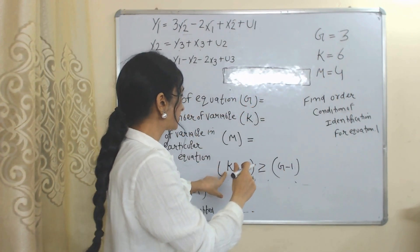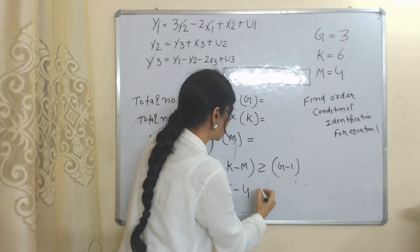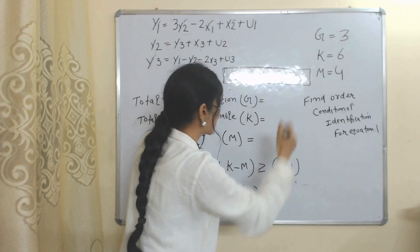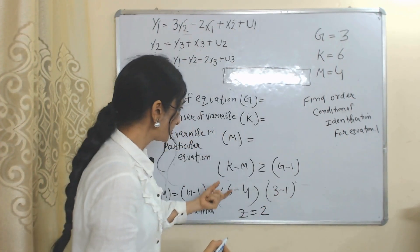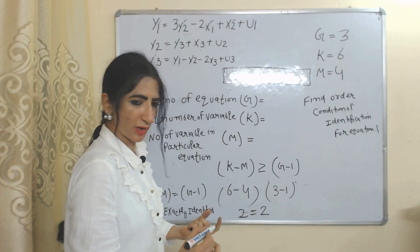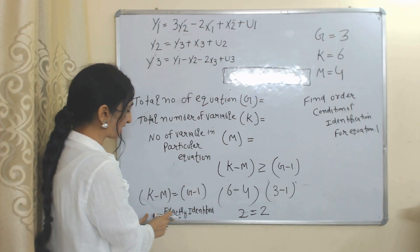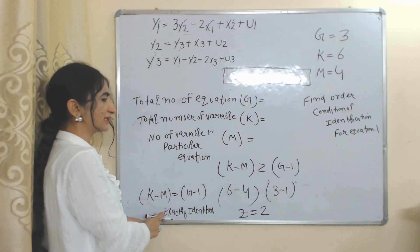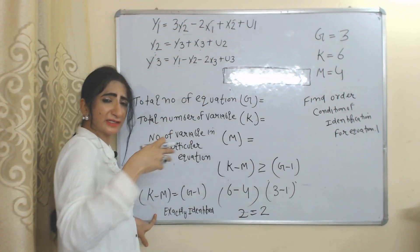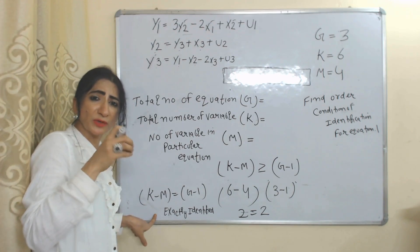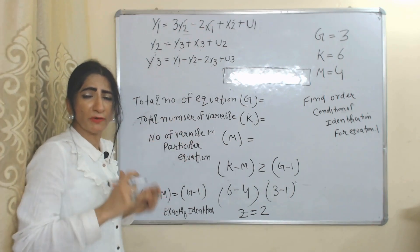We have all the values; just put them into the equation: K equals 6, M equals 4, G equals 3. So K minus M equals 6 minus 4 equals 2, and G minus 1 equals 3 minus 1 equals 2. Since K minus M is equal to G minus 1, our equation 1 is exactly identified. An exactly identified equation means we have enough information to uniquely estimate the values of the parameters.